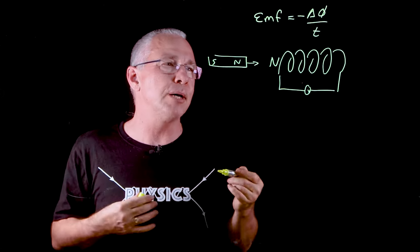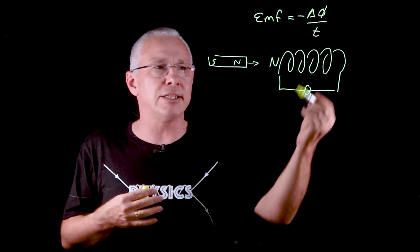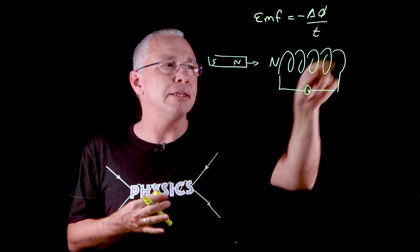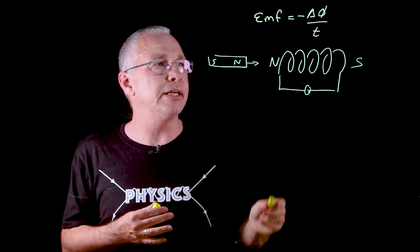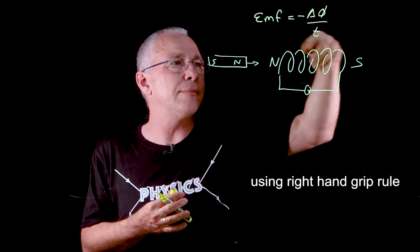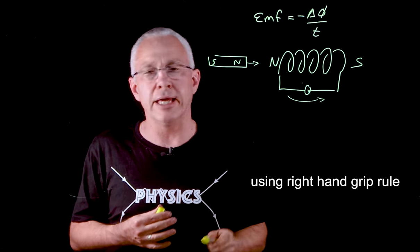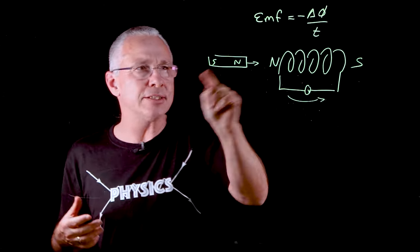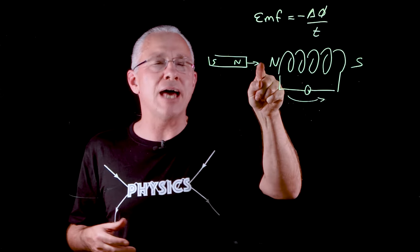Because there's a north pole over here, that means I will generate a south pole over here. Based on my diagram, my current is going to go from there to there. So if I pull that magnet out, the north is now moving away. That will produce a polarity here that is south to oppose it.